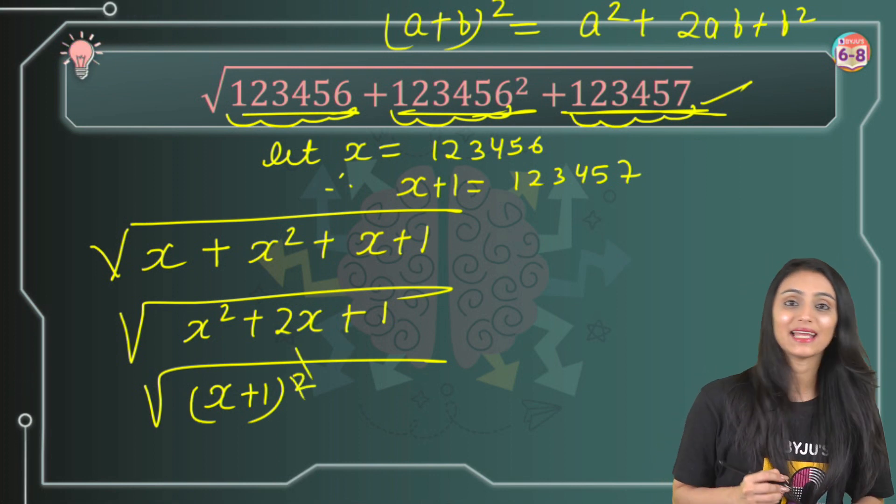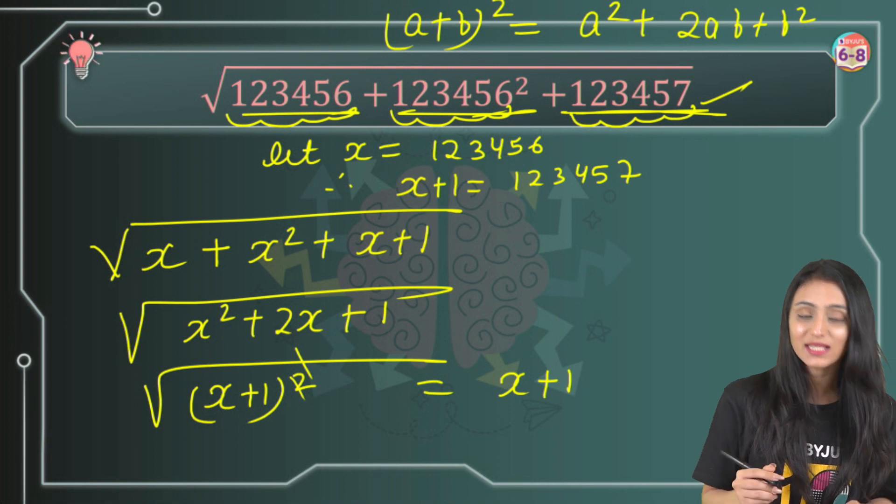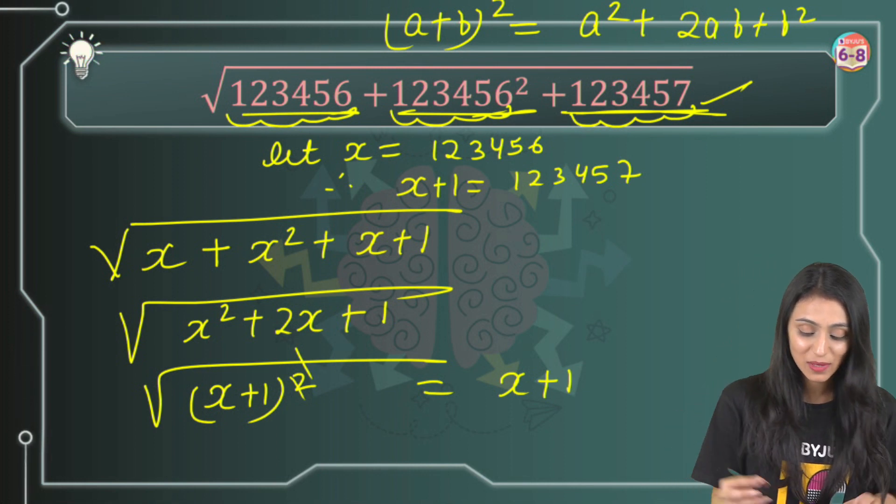And we know that square and root will get cancelled out and we will only be left with x plus 1. Right? So x plus 1, that's nothing. What is x here?